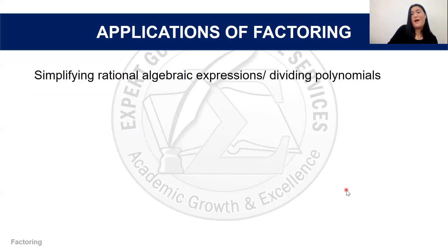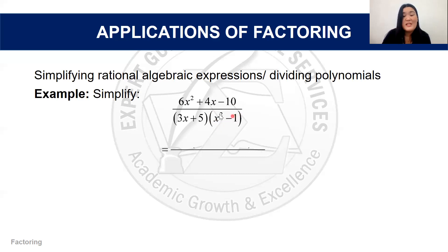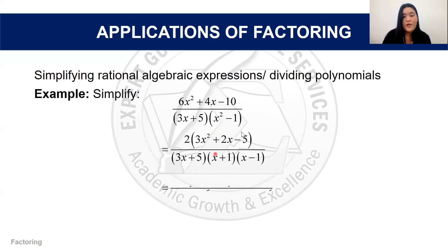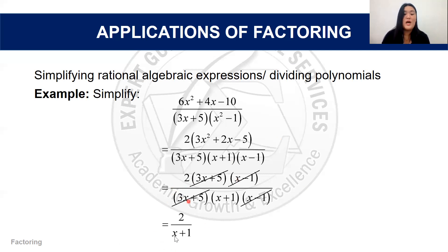Factoring has an important application: simplifying rational algebraic expressions. For example, simplify (6x² + 4x - 10) / (x² - 1). Factor the numerator by pulling out the CMF 2, giving 2(3x² + 2x - 5) = 2(3x + 5)(x - 1). The denominator x² - 1 is a difference of two squares: (x + 1)(x - 1). Cancelling the common factor (x - 1), the final simplified answer is 2(3x + 5) / (x + 1).